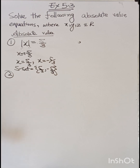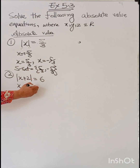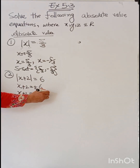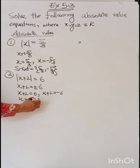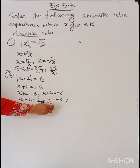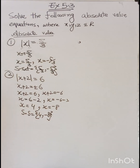Your second question: absolute value of (x + 2) equals 6. Remove the absolute value bars — the equal value becomes plus minus 6. Write x + 2 = +6 and x + 2 = -6. When +2 goes to the other side it becomes minus 2. So x = 6 - 2 = 4, and x = -6 - 2 = -8. The solution set is {4, -8}.